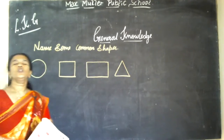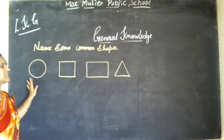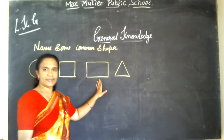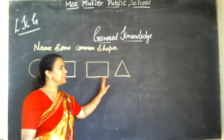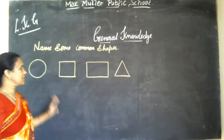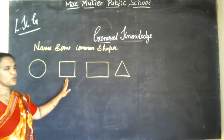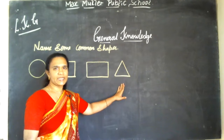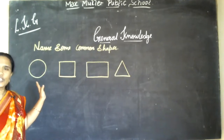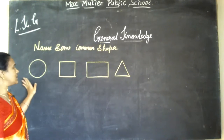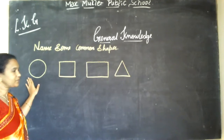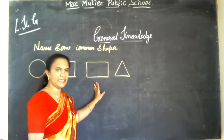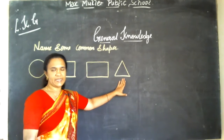Name some common shapes. Circle. Square. Rectangle. Rectangle. These are all the shapes. Circle. Square. Rectangle. Triangle.